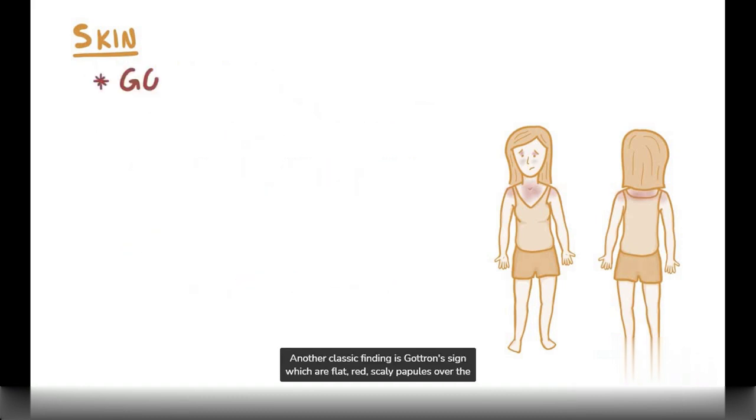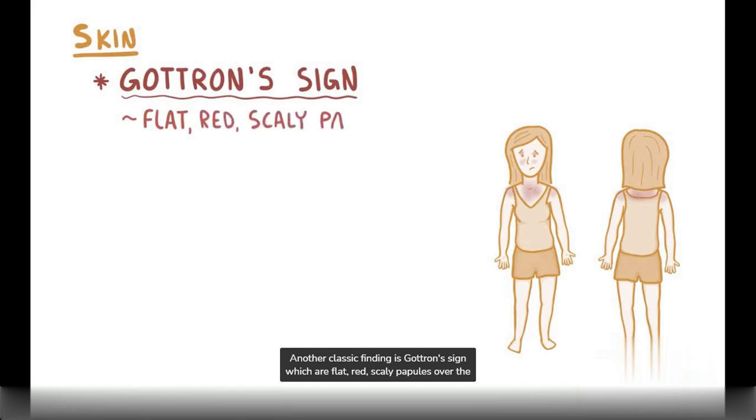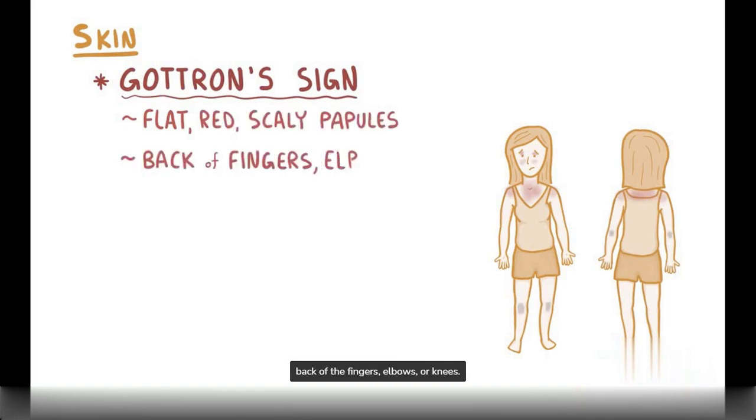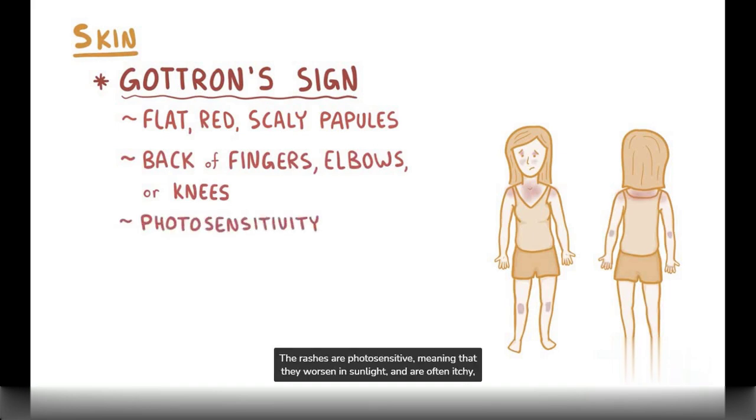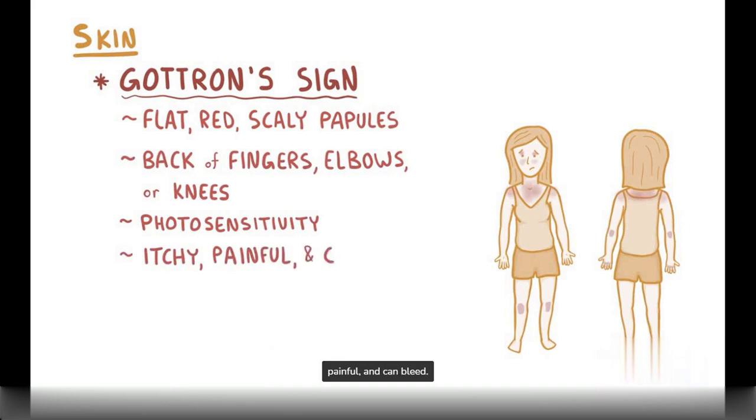Another classic finding is Gottron's sign, which are flat, red, scaly papules over the back of the fingers, elbows, or knees. Also the rashes are photosensitive, meaning that they worsen in sunlight, and are often itchy, painful, and can bleed.